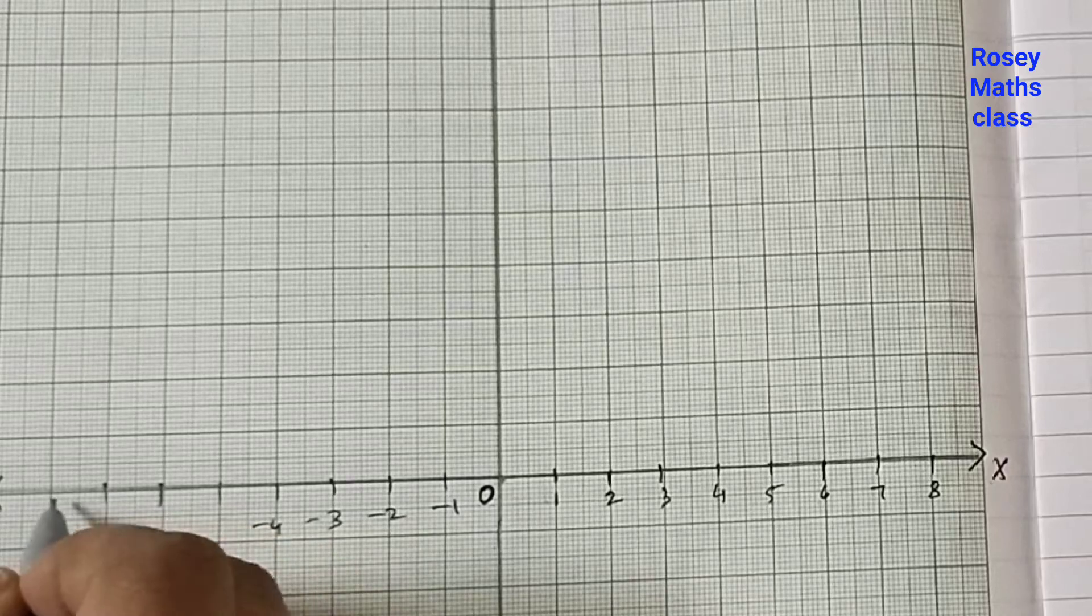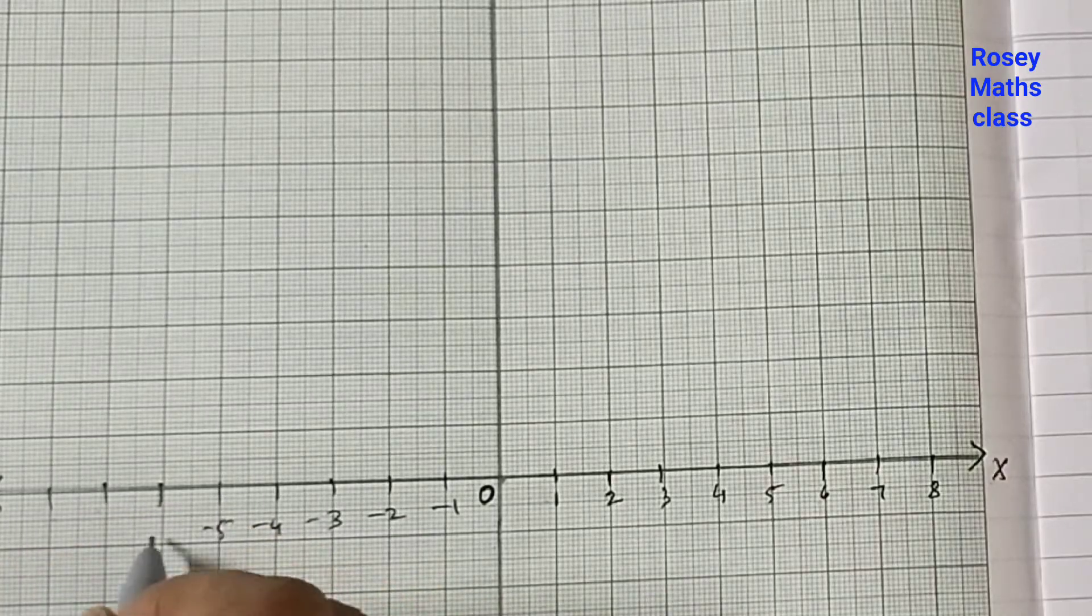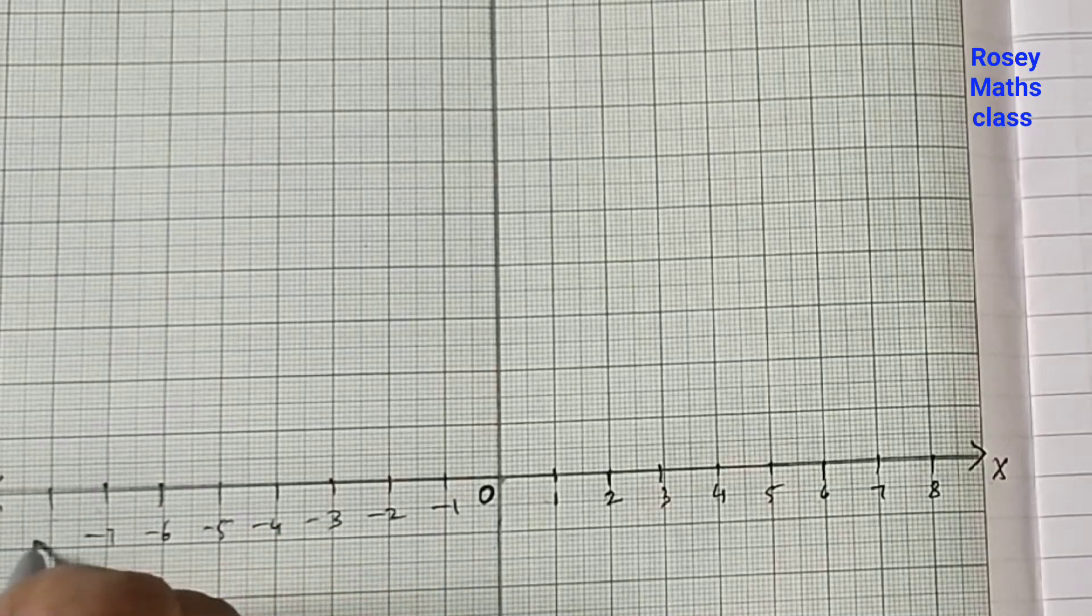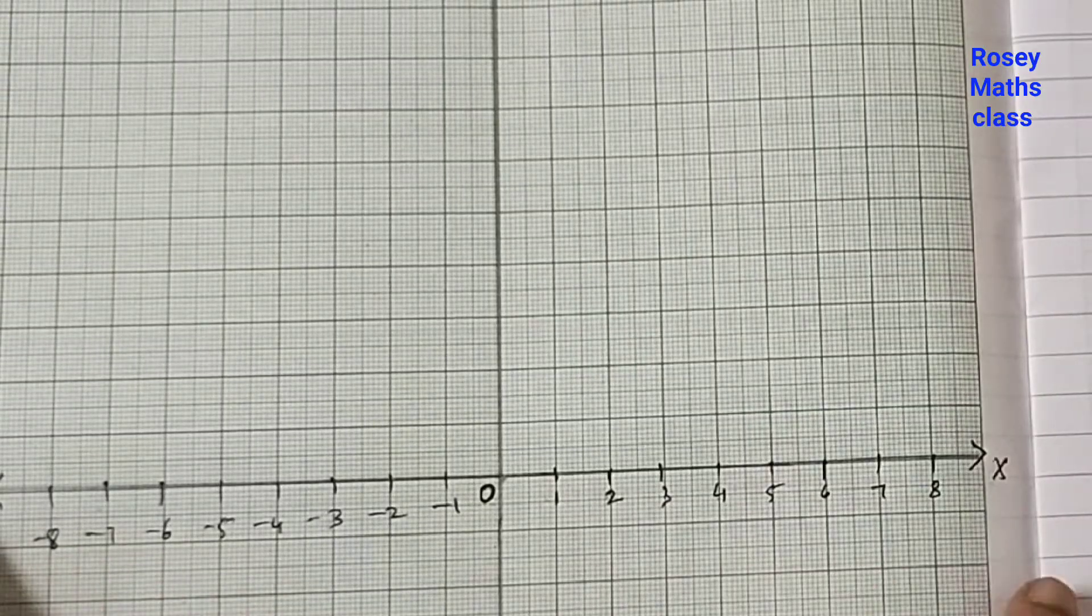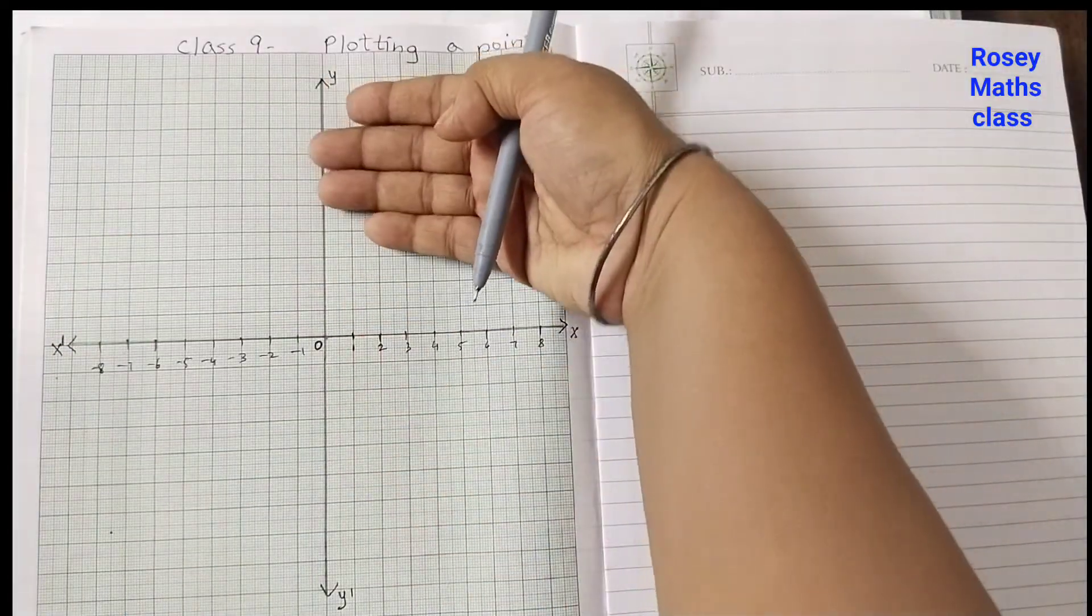For the y-axis, this is the positive side, this is the negative side. So equal spaces: one, two, three, four, five, eight.